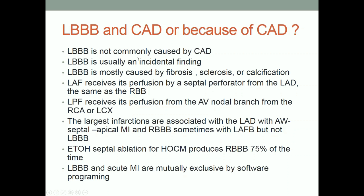Left bundle branch block is not commonly caused by coronary artery disease - is that a rule? CAD is one of the important causes; there can be other reasons but CAD is definitely in there. Left bundle branch block is often an incidental finding. If you think it's caused by coronary artery disease, it couldn't be an incidental finding. Left bundle branch block is mostly caused by fibrosis, sclerosis, or calcification of the left bundle or the bundle of His, giving you complete heart block. The left anterior fascicle receives its perfusion from a septal perforator from the LAD - the same as the right bundle branch.